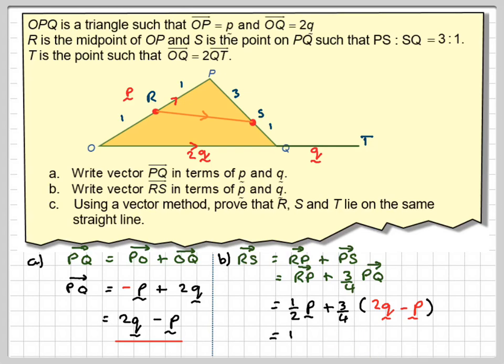Expanding the bracket, we get half p plus 3 over 2, 3 quarters times 2 is 3 over 2 q minus 3 over 4 p.